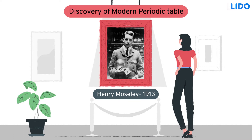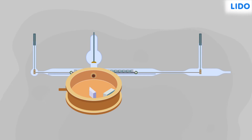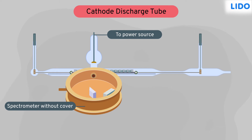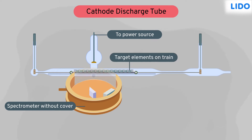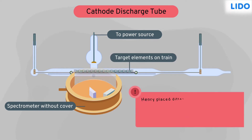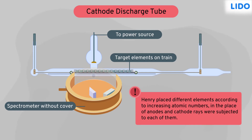Let's see what his experimental setup and observations are. Does this setup look similar to you? This is a cathode discharge tube. In the same tube, Henry placed different elements according to increasing atomic numbers in the place of anodes, and cathode rays were subjected to each of them.